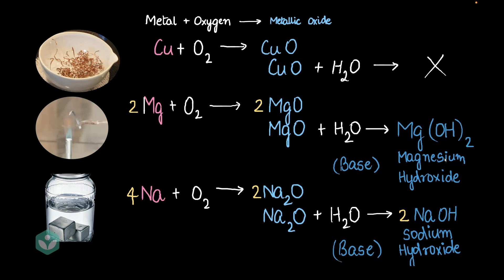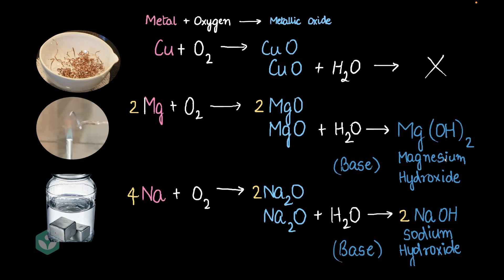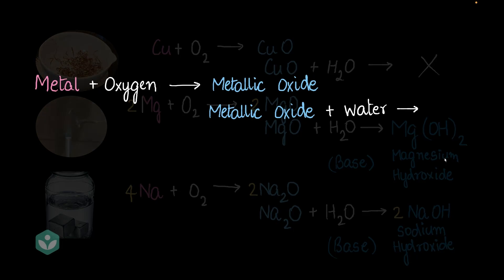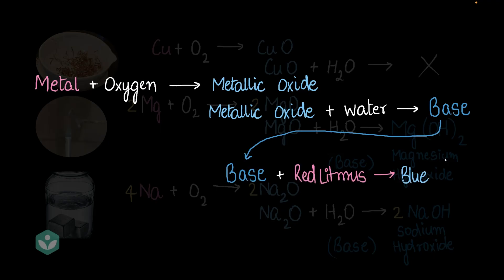So, we can just as a general thing write down that metal plus oxygen gives metallic oxide and metallic oxide plus water gives us a base. Now, I want to remind you about something you already know. A base turns red litmus blue, right? Great.